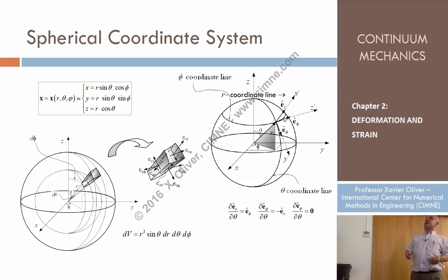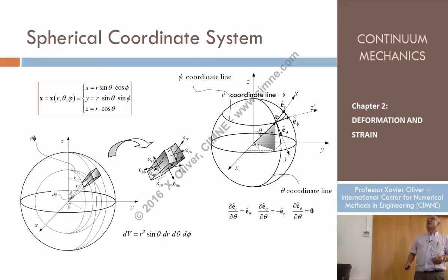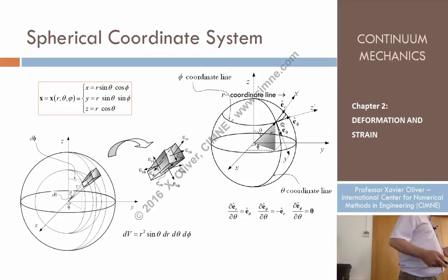The three coordinate lines — the radius, the parallel, and the meridian — are orthogonal. They define a local Cartesian system: x-prime in the direction of r, y-prime in the direction of increasing theta, and z-prime in the direction of increasing phi. The positive sense follows the increase of theta and phi respectively. This defines the spherical system of coordinates.